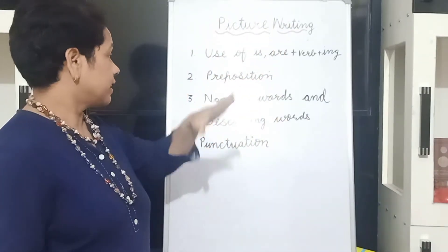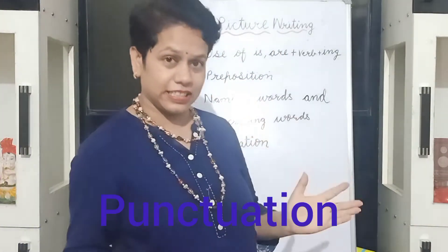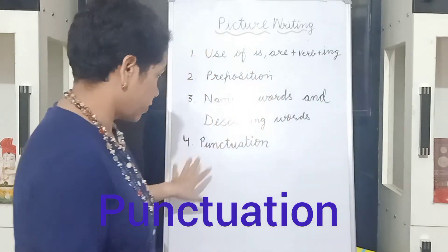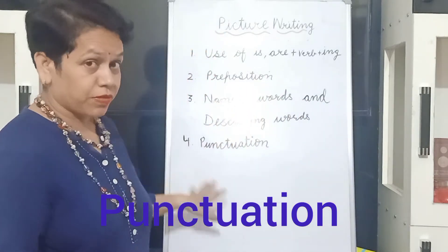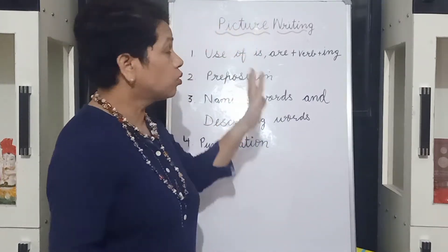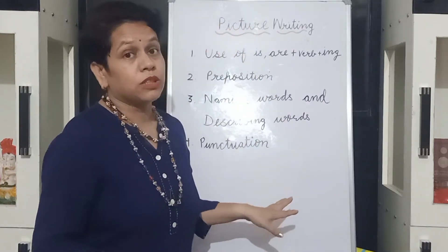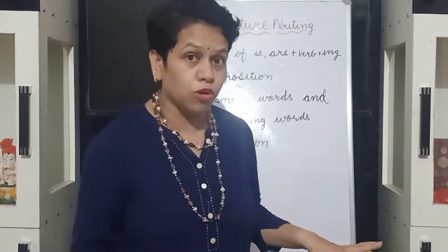Last but not the least — punctuation. Start your sentence with a capital letter and end with a full stop, and use commas. So here are the rules you have to follow whenever you are writing about a picture.